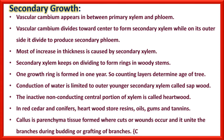Callus is parenchyma tissue formed where cuts or wounds occur in stems or shoots of plants. This callus unites branches during budding or grafting, so that union of two different stems or cuttings is due to callus — a parenchyma tissue. Cork on a commercial scale is obtained from Quercus suber, which is a major source for commercial cork.